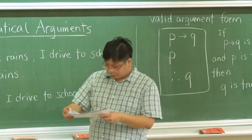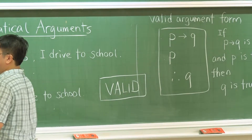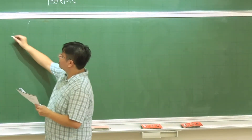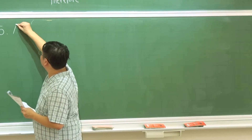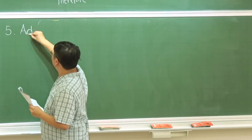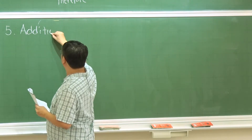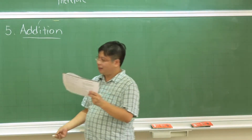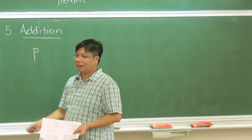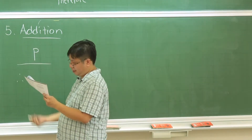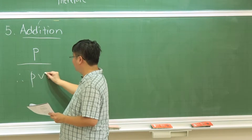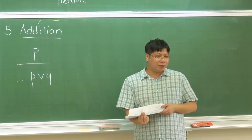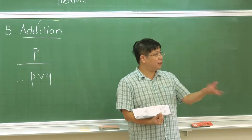The next rule is addition. If you have P, then you can conclude P or Q. It makes sense: I already know P is true, so P or Q has to be true.